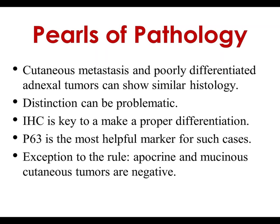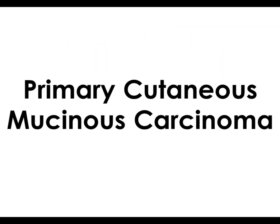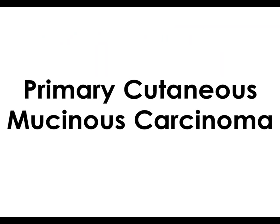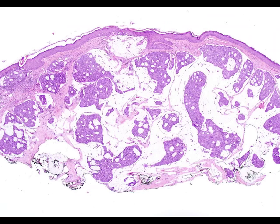Now we're going to talk about primary cutaneous mucinous carcinoma, which is another neoplasm that can be quite difficult to diagnose. This is a rare neoplasm most commonly located around the head and neck, especially around the eyelids. It is a slowly growing flesh-colored to blue nodule, locally aggressive but usually does not metastasize — rare metastases go to regional lymph nodes. Here we have an example: the tumor is composed of pools of mucin with cribriform clusters of cells showing clear-cut ductal differentiation. When you see something like this in the skin, your first reaction should be: is this a metastasis or a primary tumor?